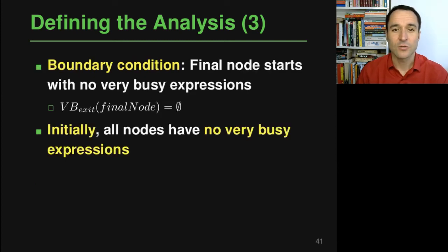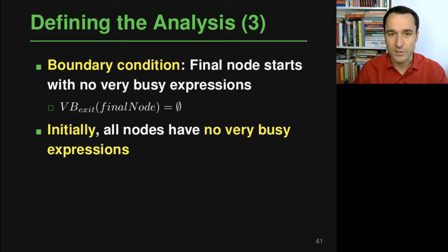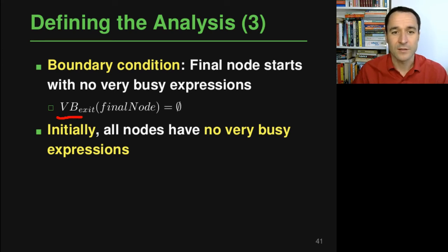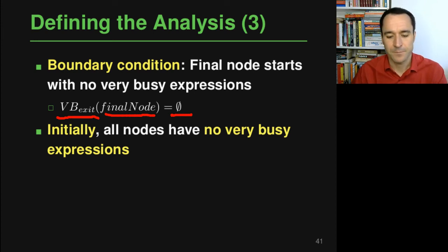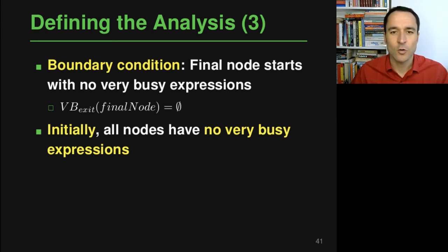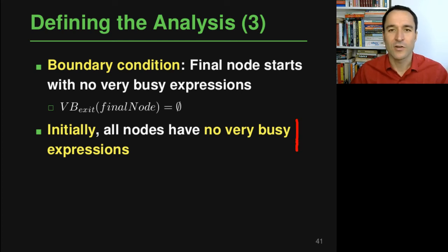For the boundary condition and initial values: since this is a backward analysis, the boundary condition defines vb_exit at the exit node, which is the empty set — at the exit we don't know of any expression that will be used afterward. For all intermediate nodes, we also start with the empty set as the initial state.